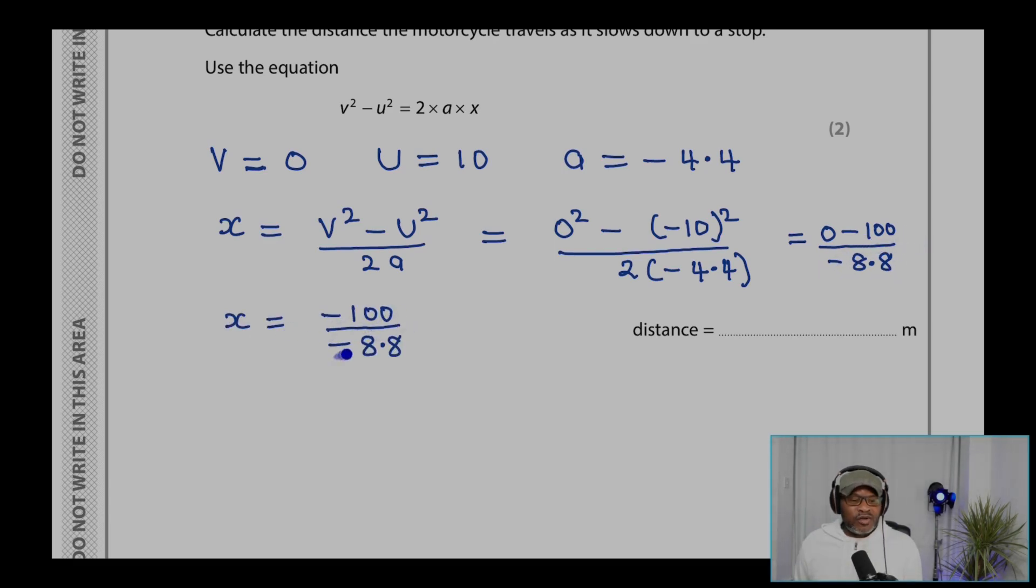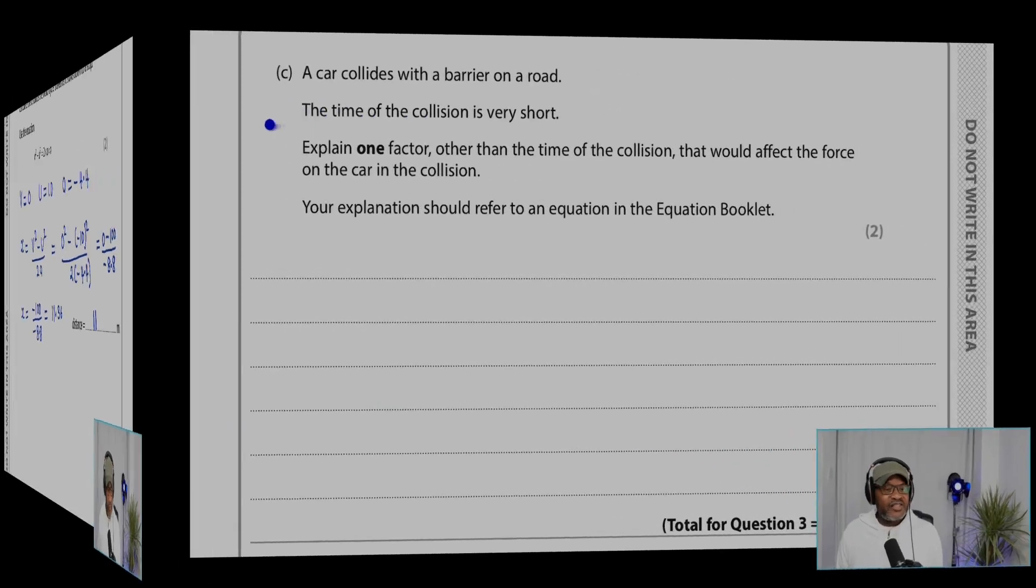X equals minus 100 over minus 8.8 equals 11.36. So we can say the distance traveled will be 11 meters.